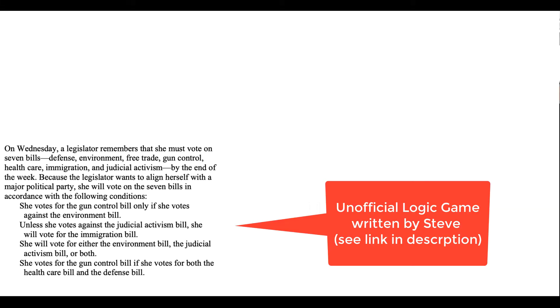She votes for gun control only if against environment. So, how can we diagram that? So G, if G then not E.